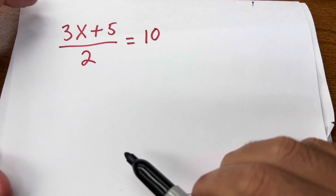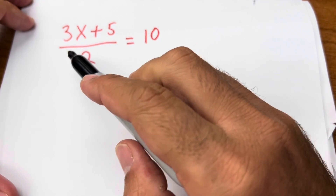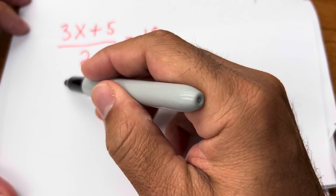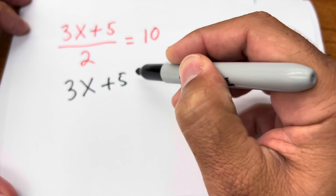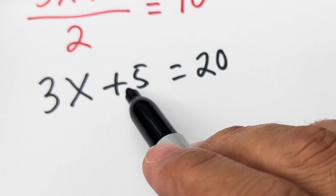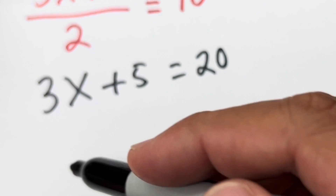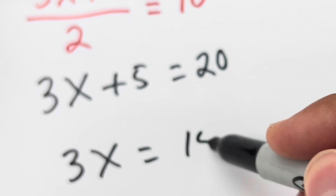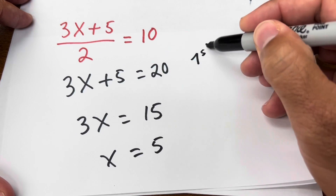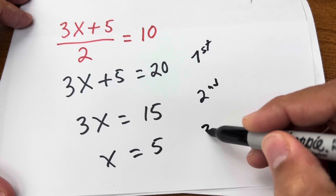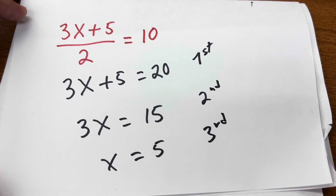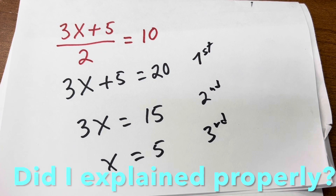Let's do one more example — this is three steps. Step one: multiply by 2 on both sides, so 2 times 10 is 20, giving us 3x plus 5 equals 20. Step two: subtract 5 on both sides — that becomes 0, leaving 3x equals 15. Step three: divide by 3, so x equals 5. We just followed the same process as one-step equations, extended to three steps.